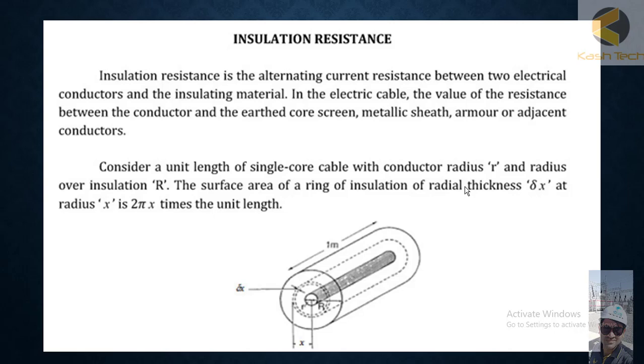Insulation resistance is the alternating current resistance between two electrical conductors and the insulating material. In electric cable, the value of resistance between conductor and the earth core screen, metallic sheath, armor, or adjacent conductors.